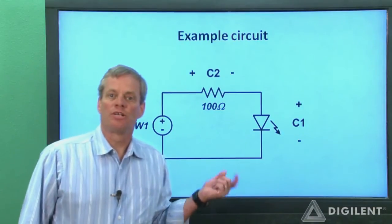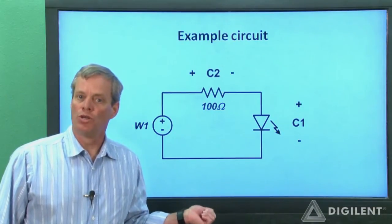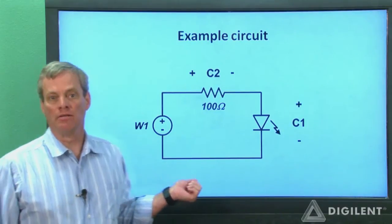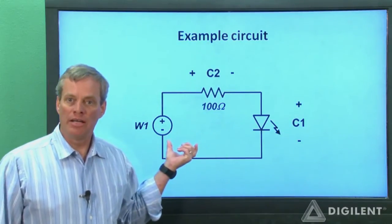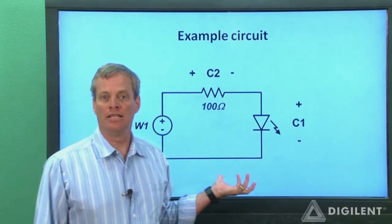We'll use the same circuit as the one from the second scope tutorial project, the project about triggering. The circuit's shown here. It's simply an LED connected to channel 1 of our AWG so that we can apply a time varying voltage to the LED.